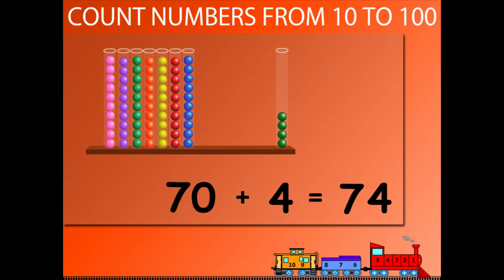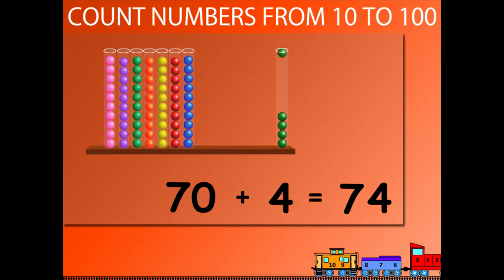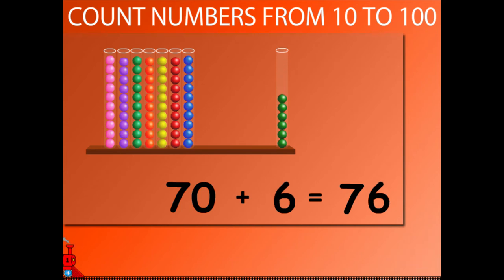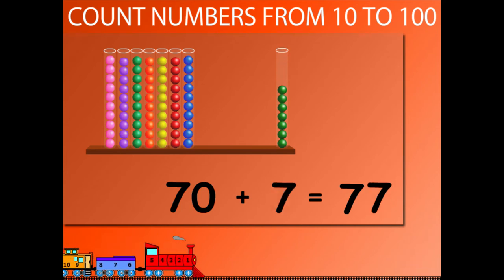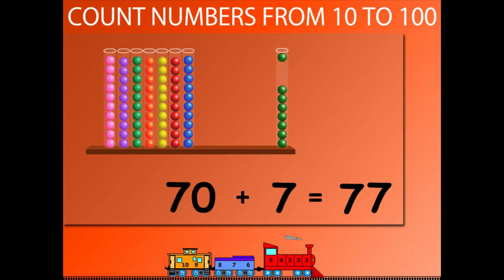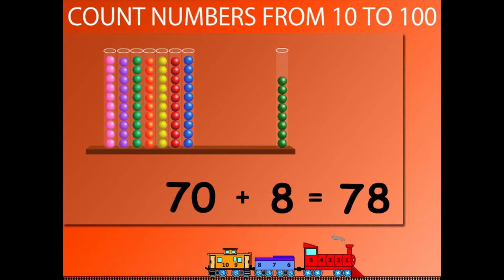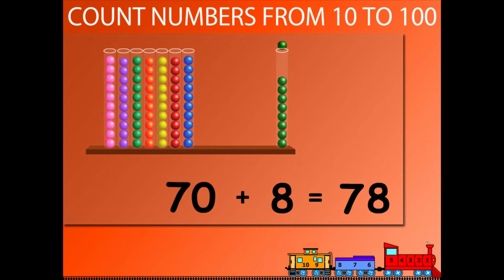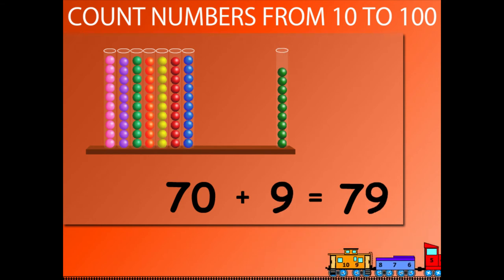70 plus 4 is equal to 74. 70 plus 5 is equal to 75. 70 plus 6 is equal to 76. 70 plus 7 is equal to 77. 70 plus 8 is equal to 78. 70 plus 9 is equal to 79.